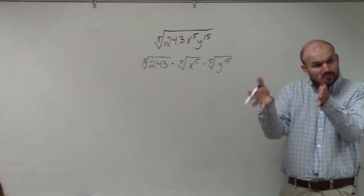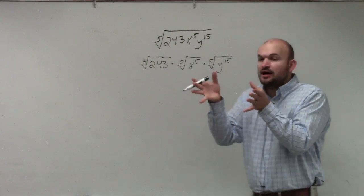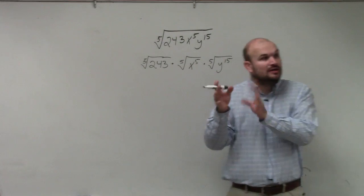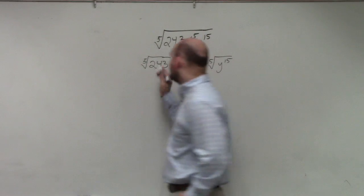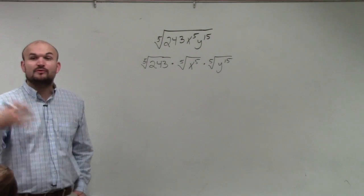Do you remember we wrote this rule? If you have the product, if you have the root of expression separated by multiplication, you can separate it, each one. So therefore, we say, well, can I rewrite the fifth root? Can I write 243 as a number raised to the fifth power?